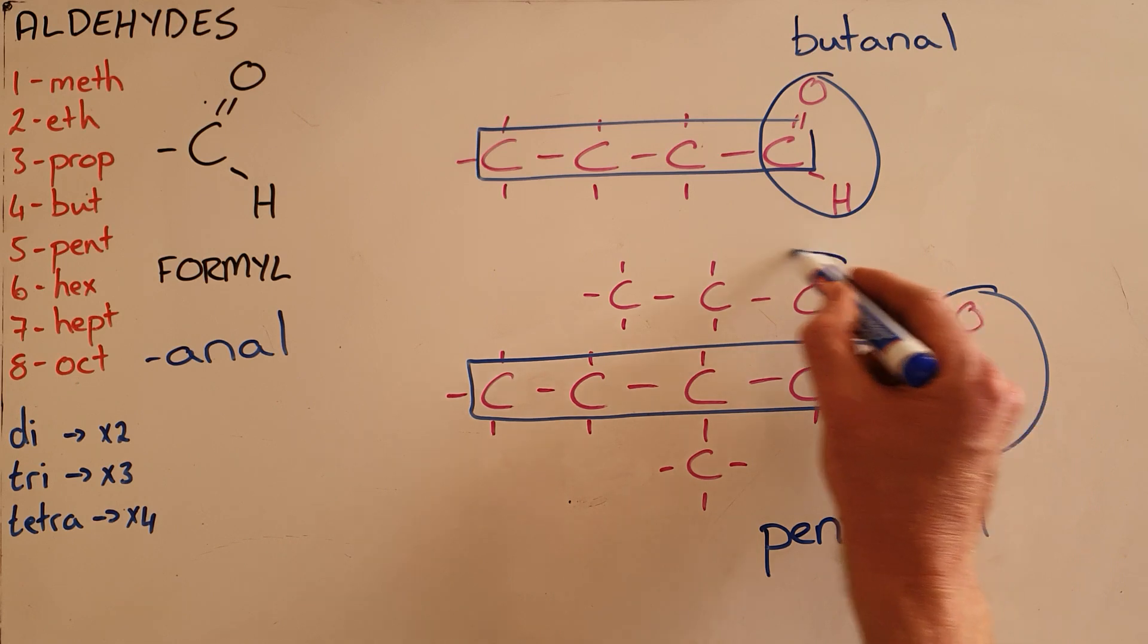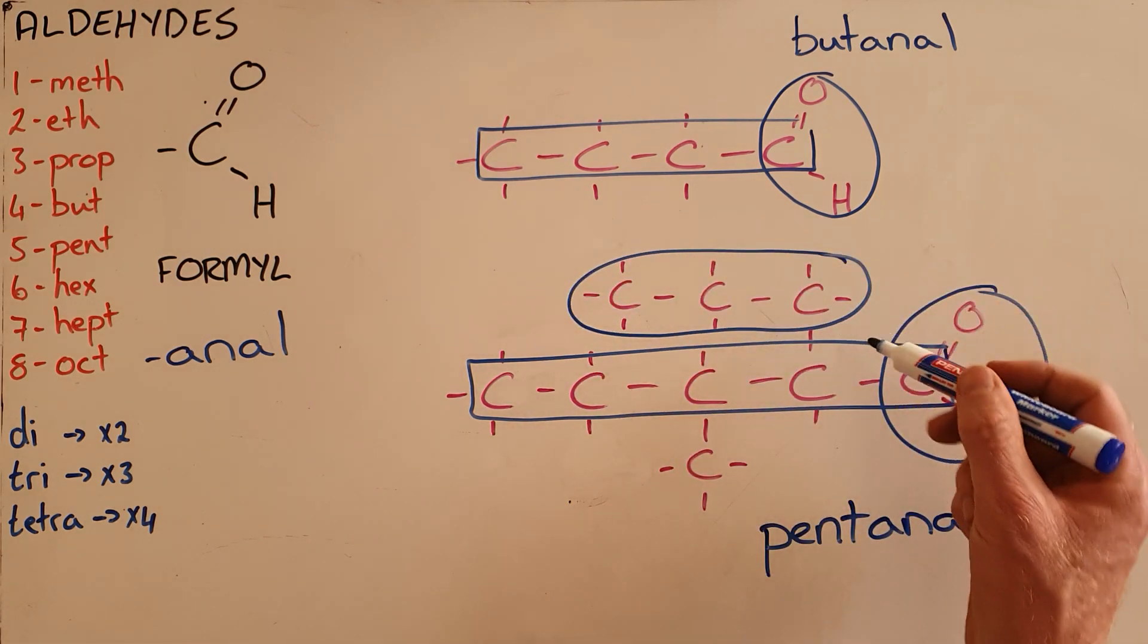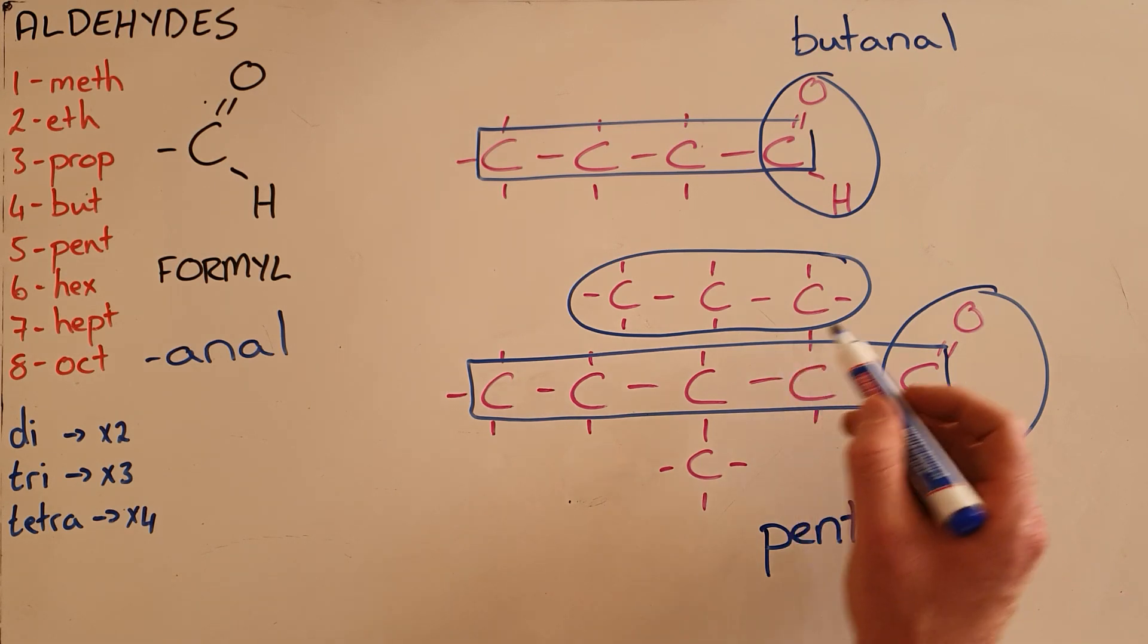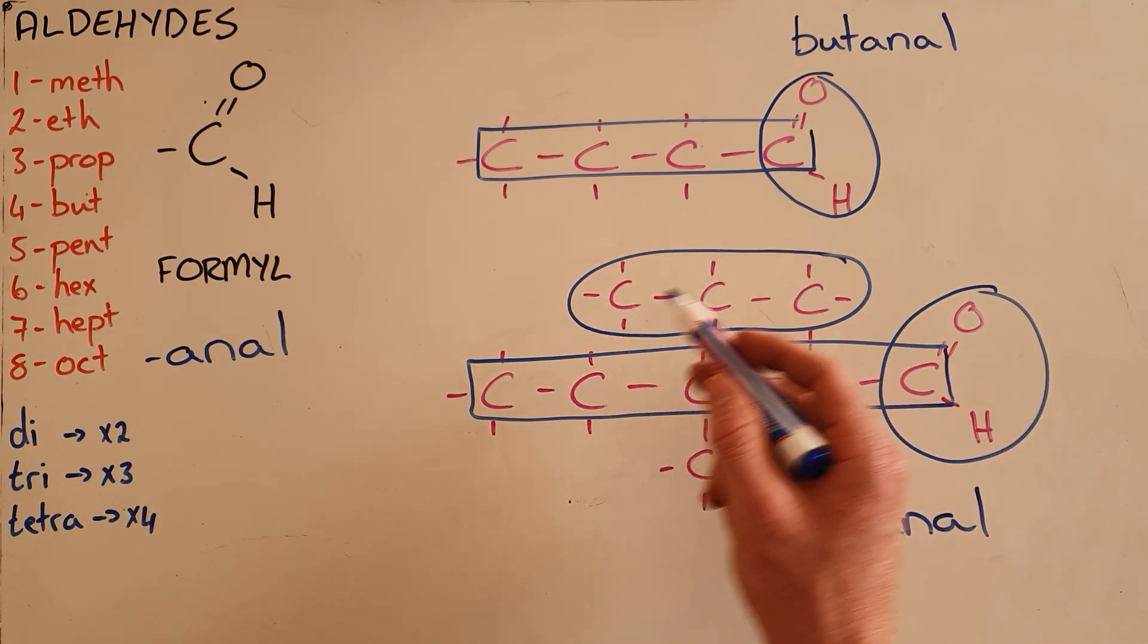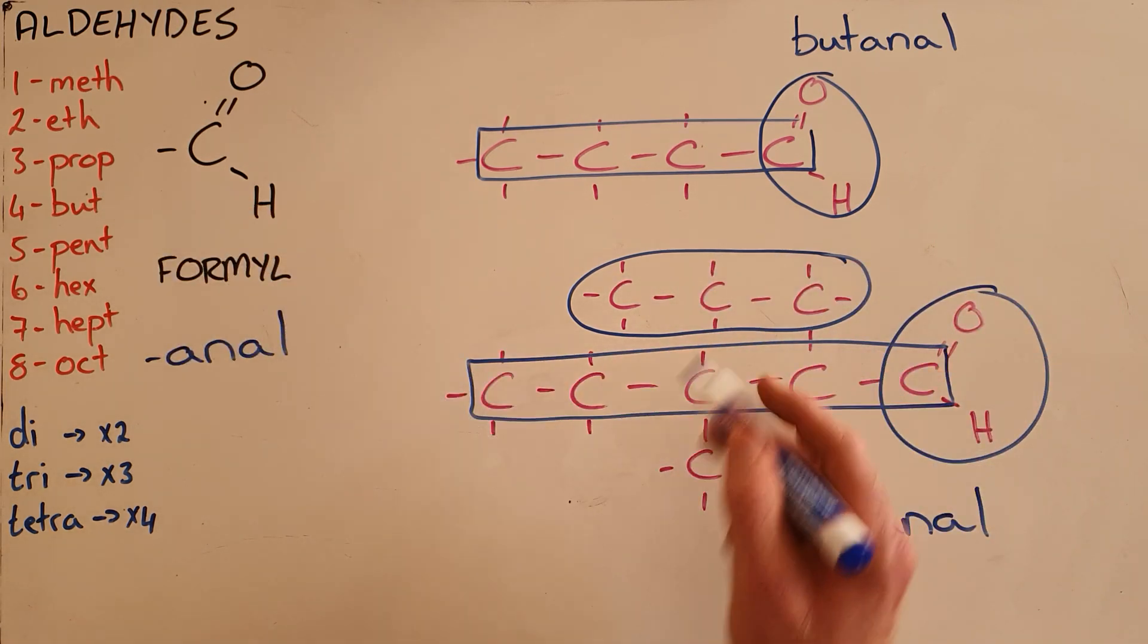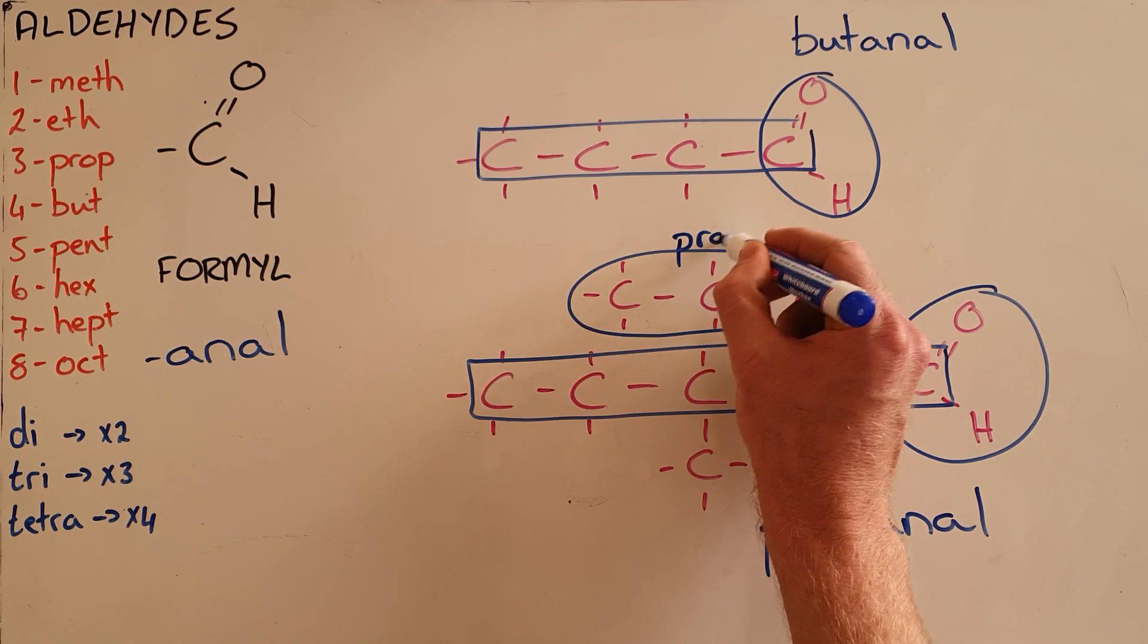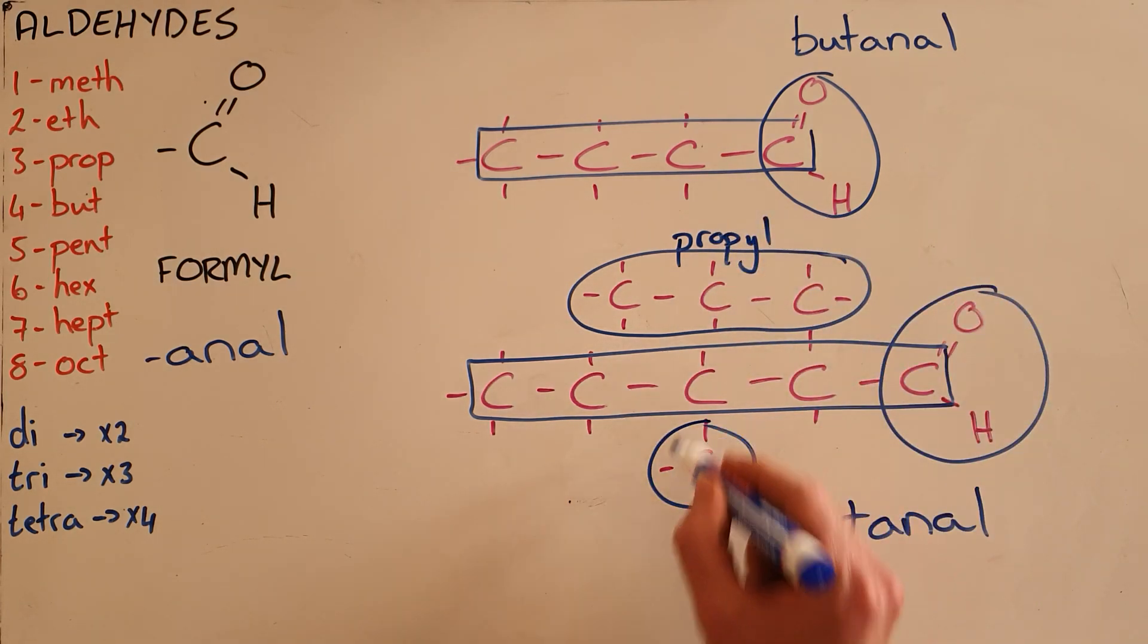Then we name the alkyl branches as we always would. Here we can see there are three carbons attached to the main chain. Note that the fact that it bends does not affect the way we name it. Three carbons gets the prefix 'prop' and 'propyl' because it is a branch, and here we have a methyl branch.